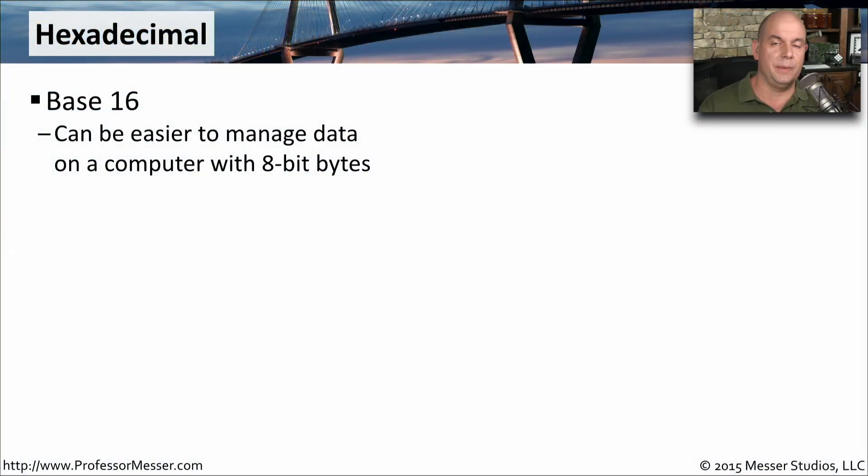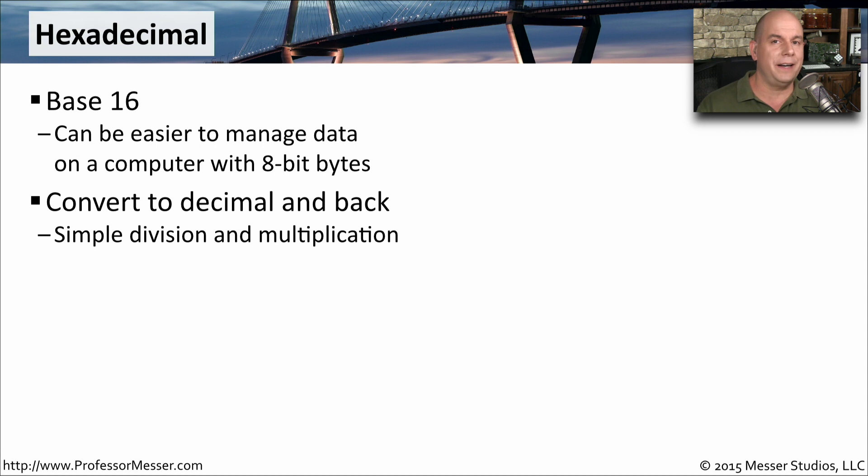A hexadecimal numbering system is base 16. Although this seems unusual for us humans accustomed to working with base 10, for a computer dealing with one byte equal to eight bits, having a base 16 numbering system is very native to the computer. Fortunately, it's very easy to convert back and forth from hexadecimal to decimal and back again, and we'll perform a number of calculations during this video.